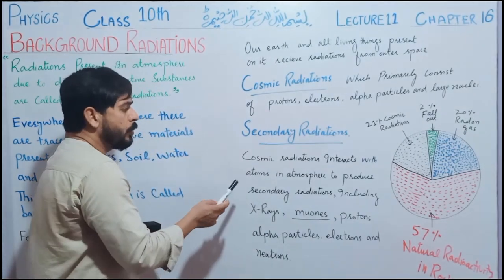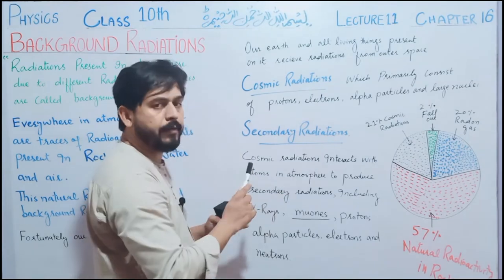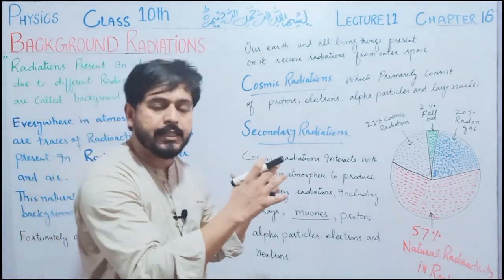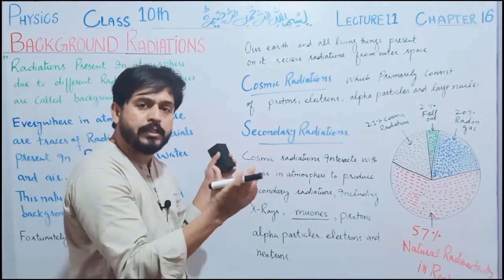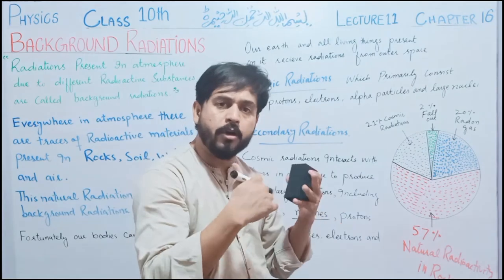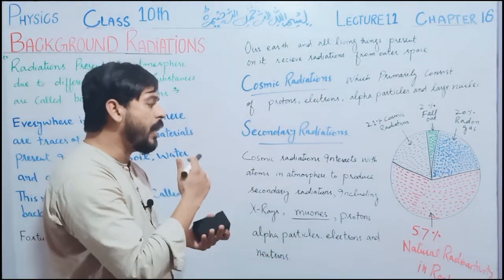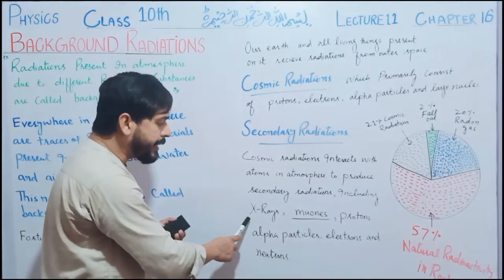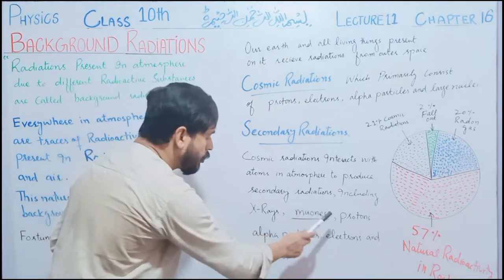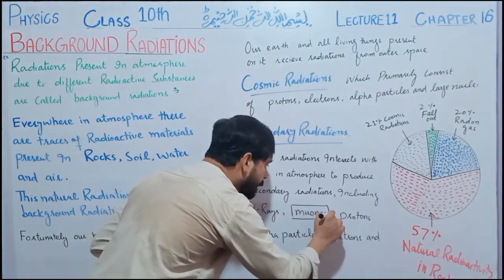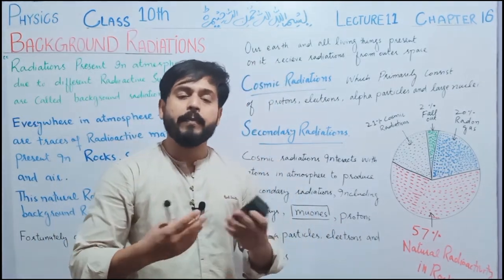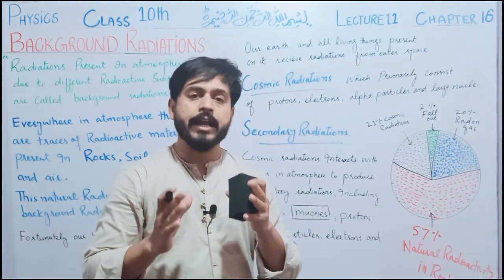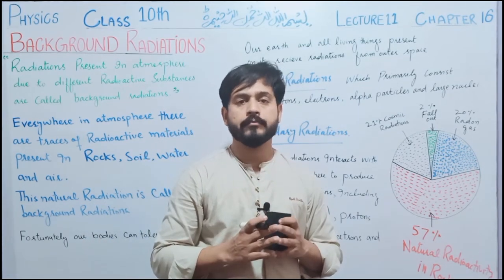Cosmic radiation interact with atoms in the atmosphere۔ ہمارے ماحول میں آنے کے بعد انہوں نے ہمارے ماحول کی gases کے molecules اور atoms کے ساتھ bombardment کی اور اس کے نتیجے میں further radiation produce ہوئی، secondary radiation کی form میں، including X-rays, muons, protons, alpha particles, electrons اور neutrons۔ Muons بھی basically primary particles like electrons ہی ہوتے ہیں، ان پر بھی negative charge ہوتا ہے، لیکن ان کا mass electrons کے مقابلے میں زیادہ ہوتا ہے۔